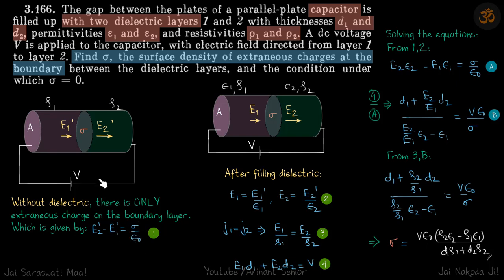If you have a doubt how this came, just view the problem 3.165. In just the previous problem we have discussed this in detail. E2 dash minus E1 dash is sigma by epsilon naught.